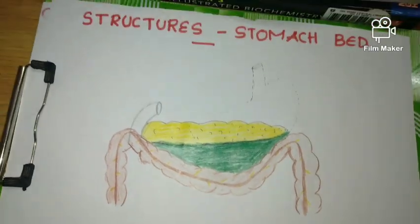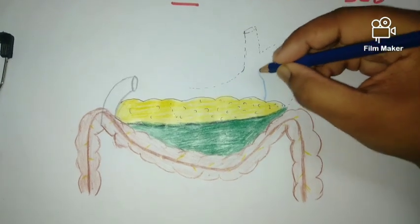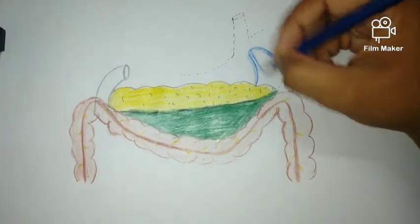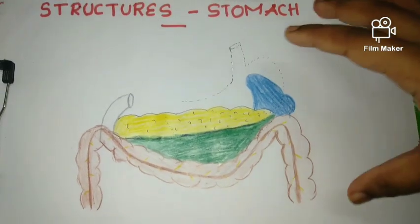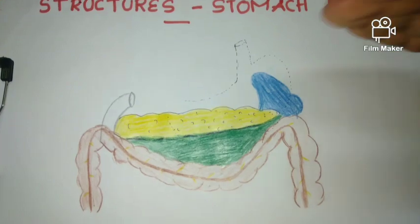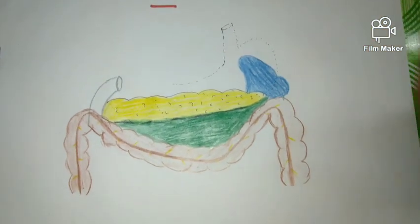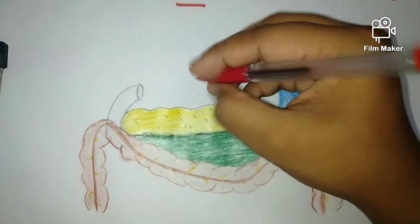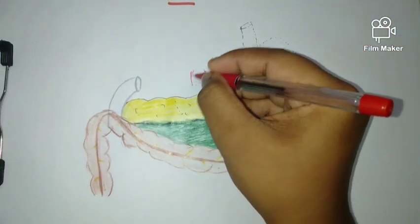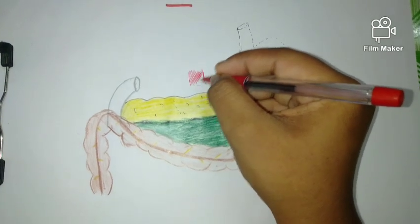After that we have to draw the spleen, which is present here. One important thing to mention: all the structures on the posterior surface of the stomach are separated by the lesser sac, but the spleen is separated from the stomach by the greater sac. After that we draw the abdominal aorta, from which the celiac trunk arises, and from the celiac trunk one branch — the splenic artery — supplies the spleen.